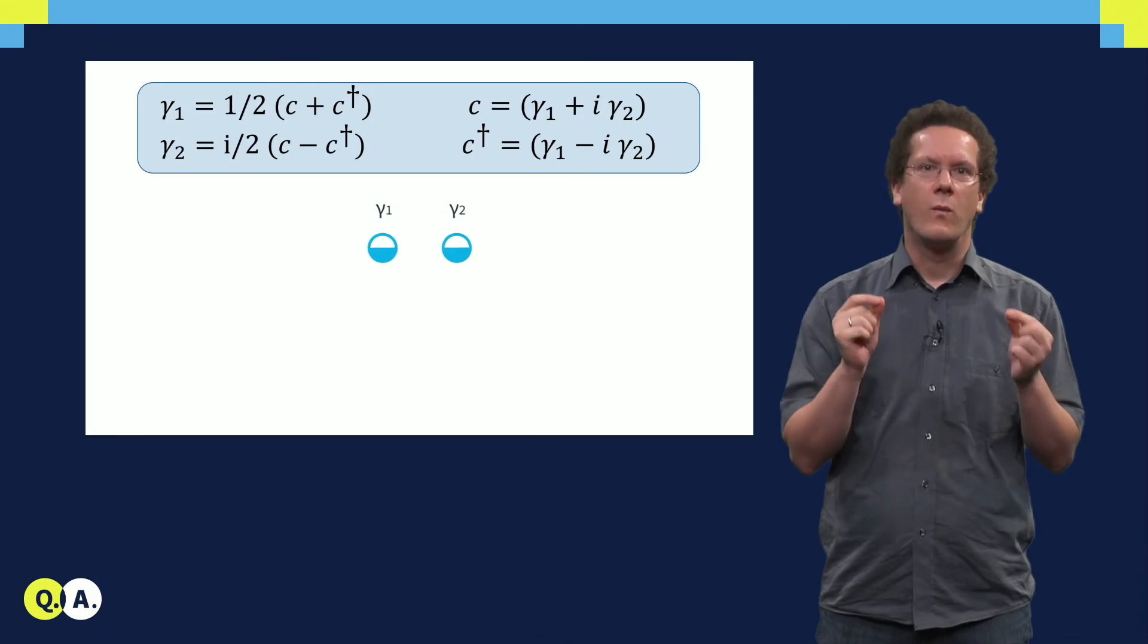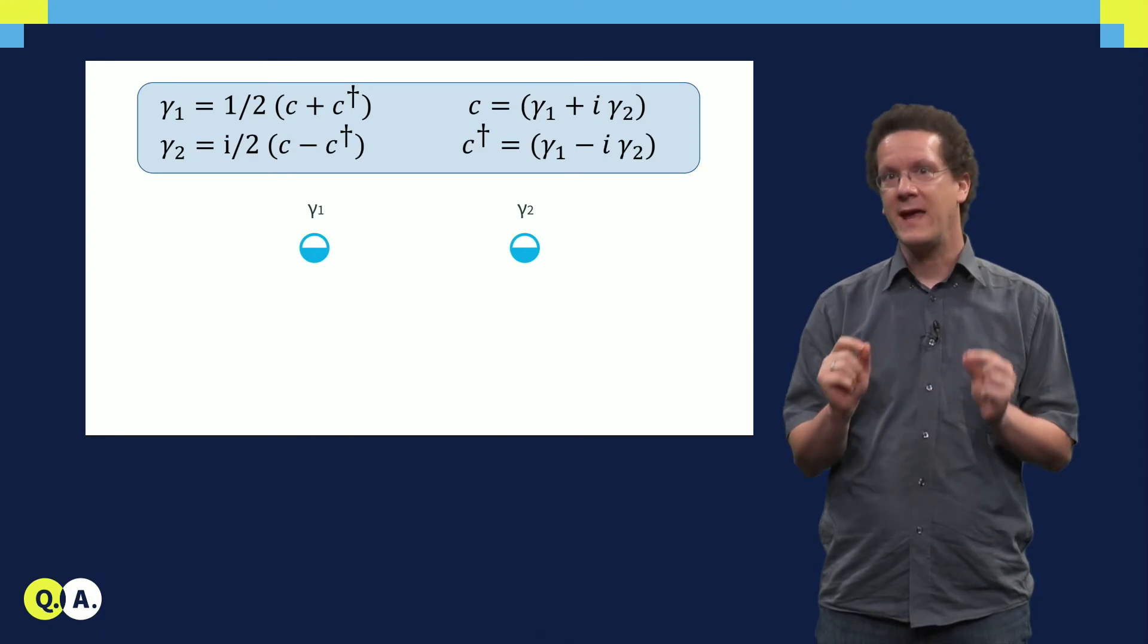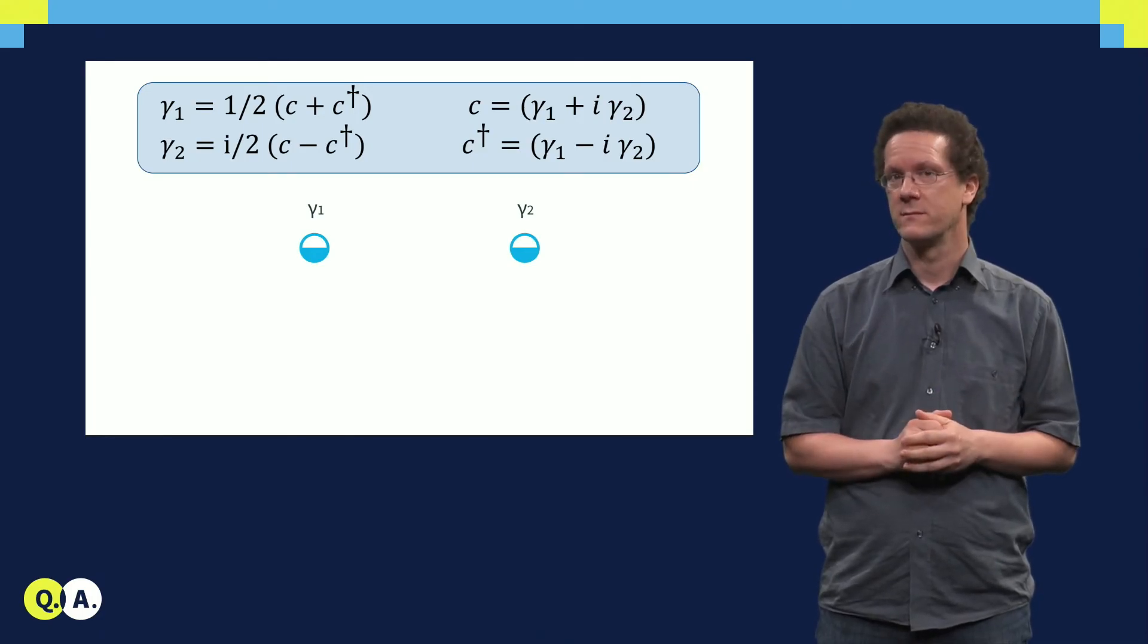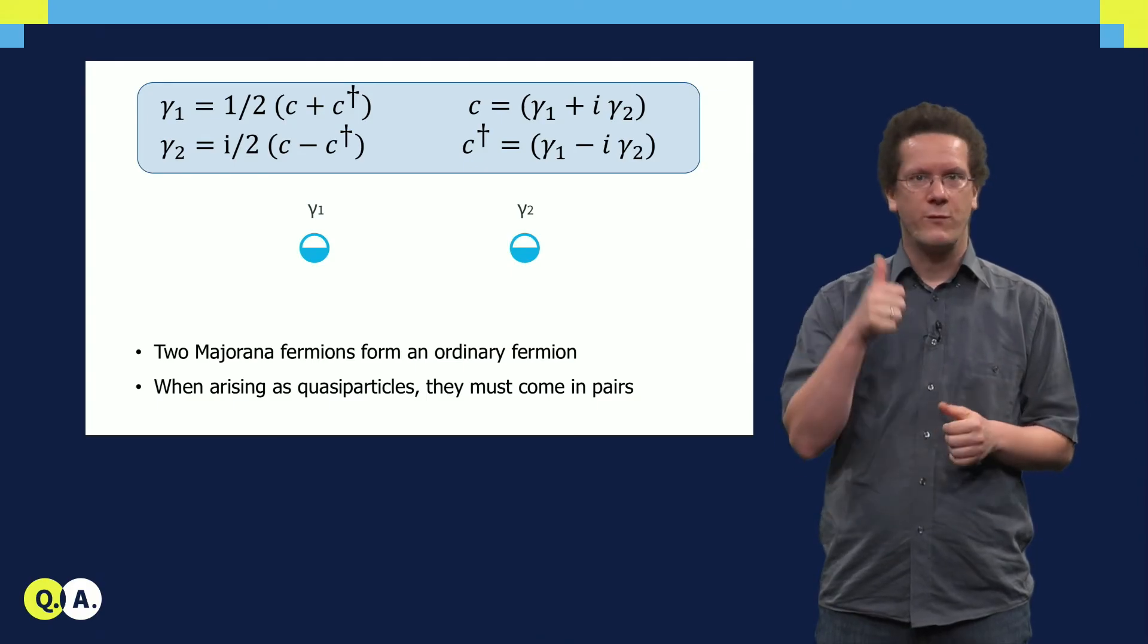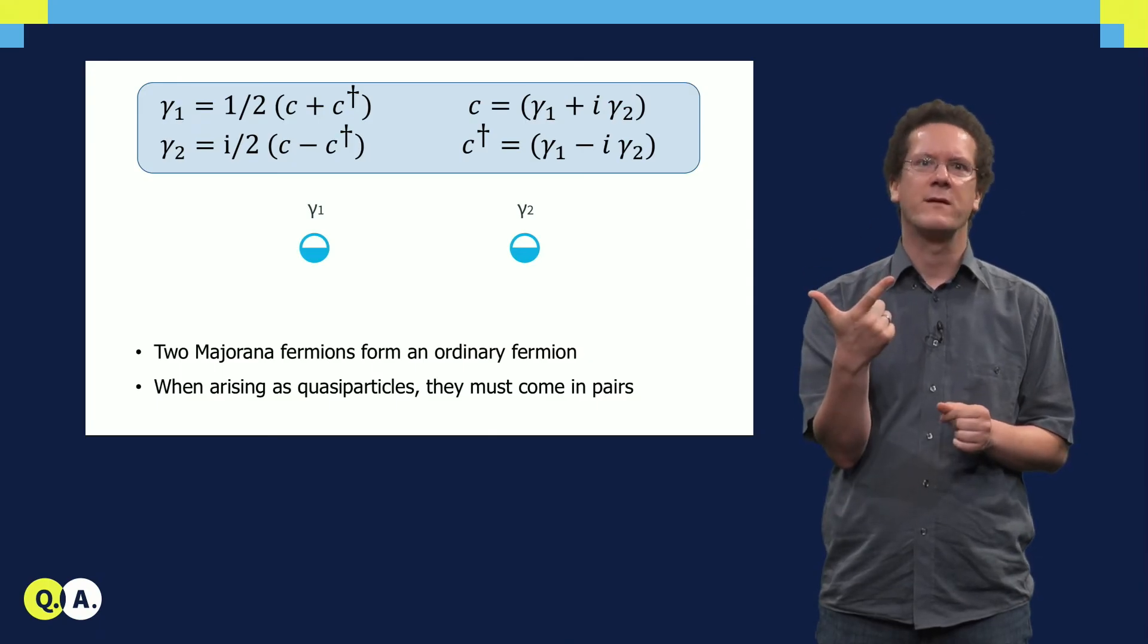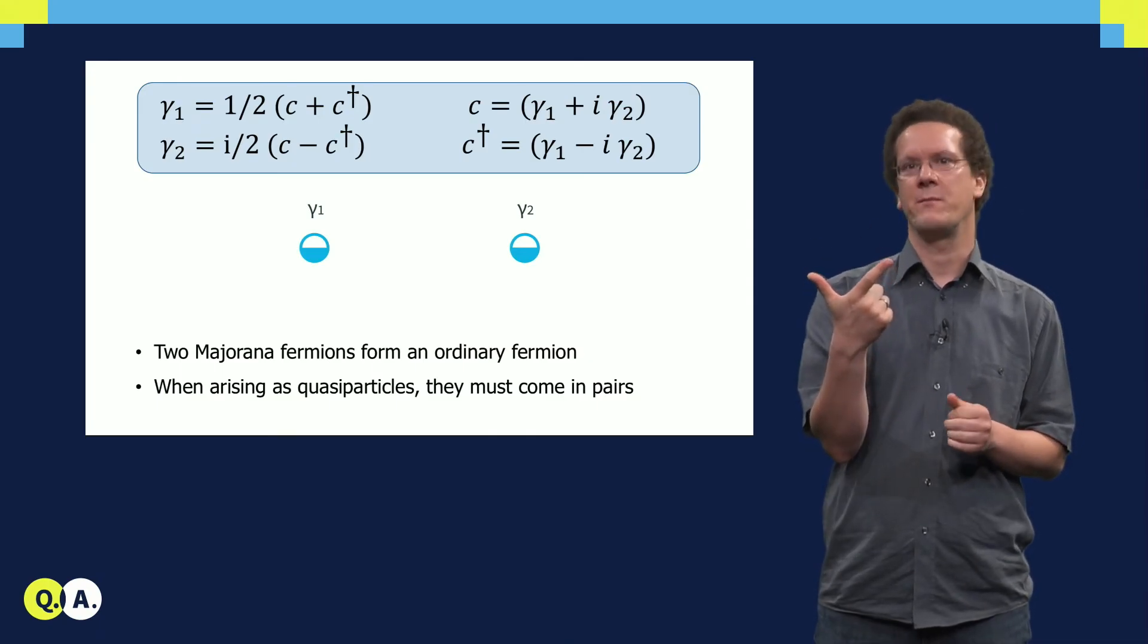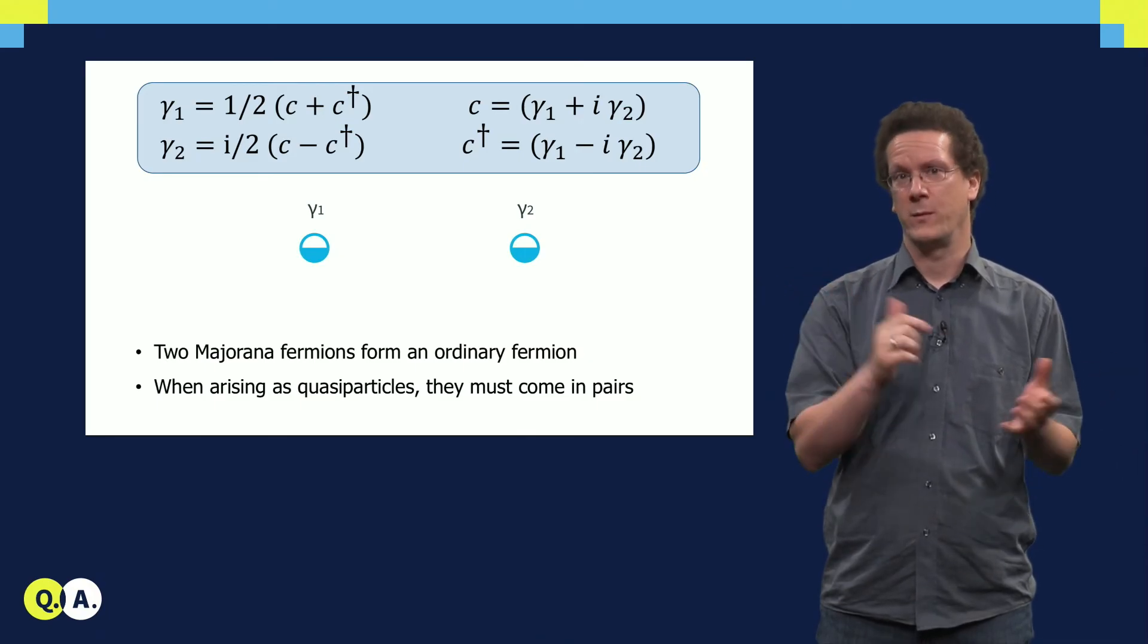However, once you can separate the two Majorana bound states, and they become distinguishable from each other, then things become interesting. We can summarize at this point: first, two Majoranas form one fermionic state, and second, as quasi-particles in condensed matter systems, they always come in pairs. In condensed matter, the building blocks are always ordinary fermions.